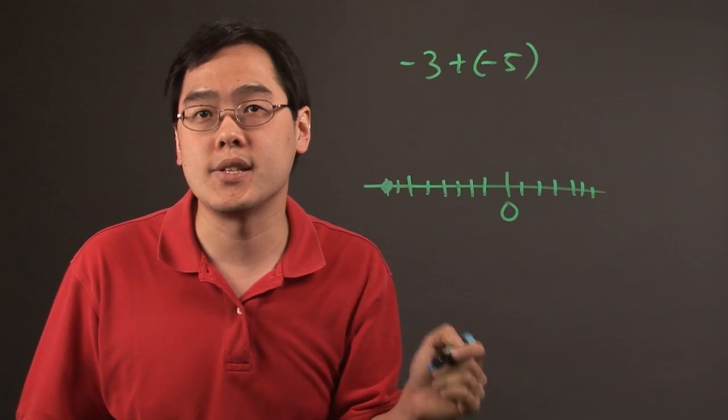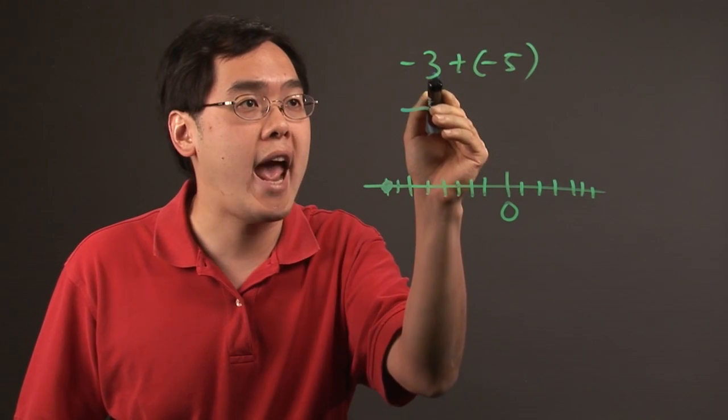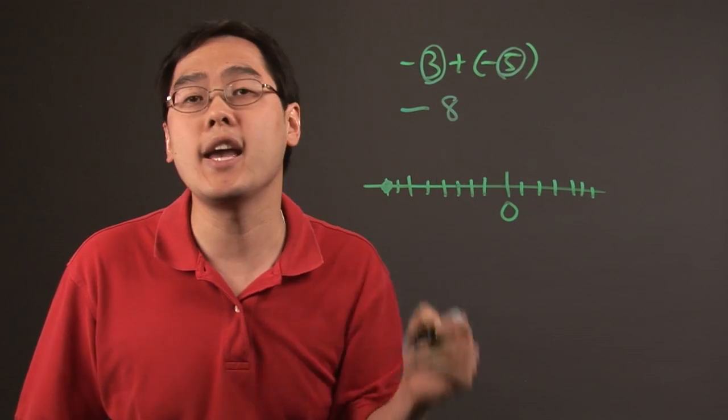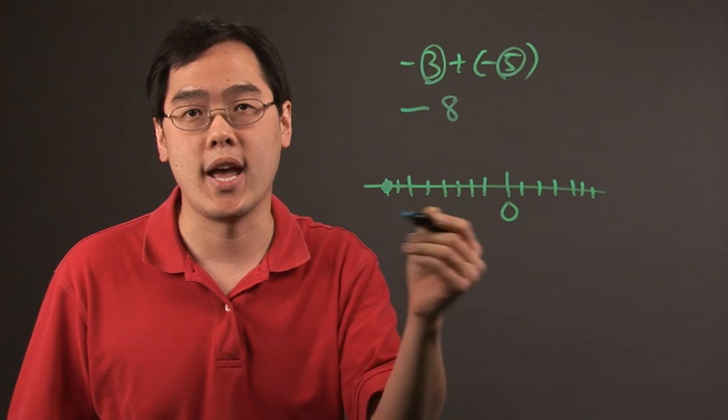So what that tells you, in essence, when you're adding two negative numbers, you're keeping the negative sign and you're just adding the 3 and the 5 together. So that means at the end of the day, you're going to have negative 8. So that is why when you add two negative numbers, you're going to have a negative.